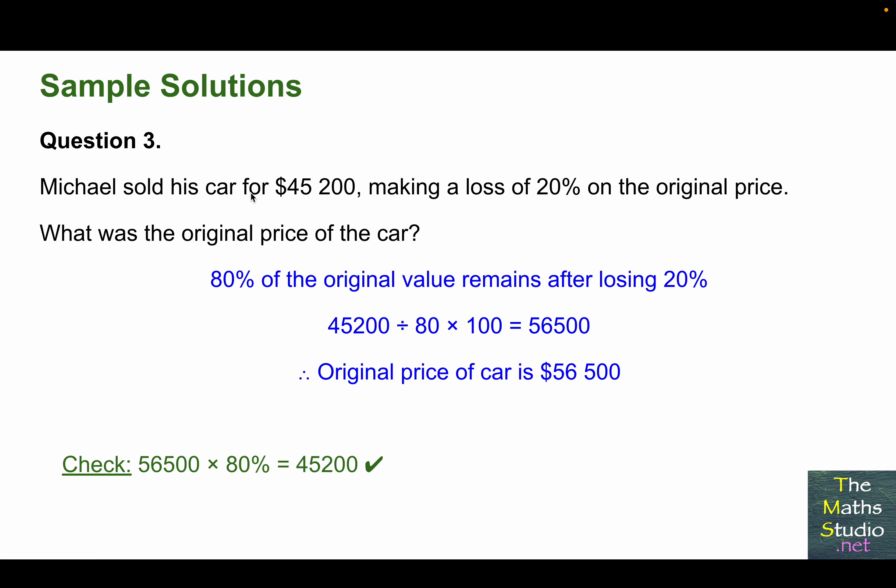For question 3, Michael sold his car for $45,200, and there's a loss of 20% on the original price. So if 20% has disappeared, we're left with 80% of the value. So 80% of the original value remains after losing 20%. So to find the original price of the car, we start off with 45,200, divide that by 80, then multiply that by 100, and we get 56,500. Therefore, the original price of the car is $56,500.